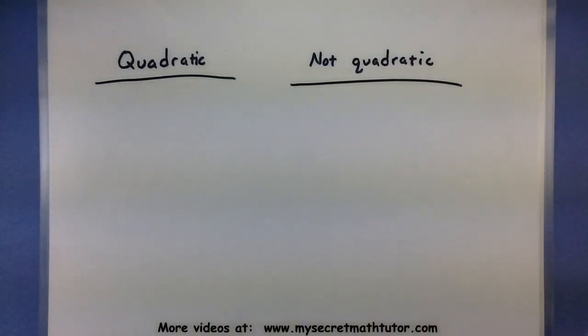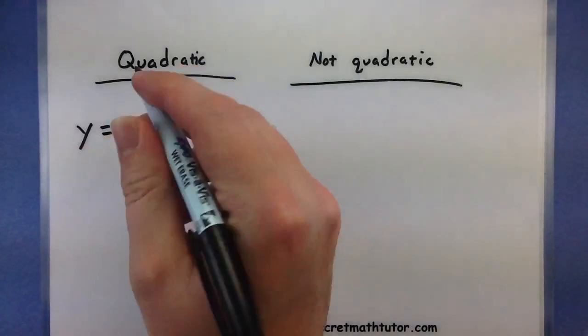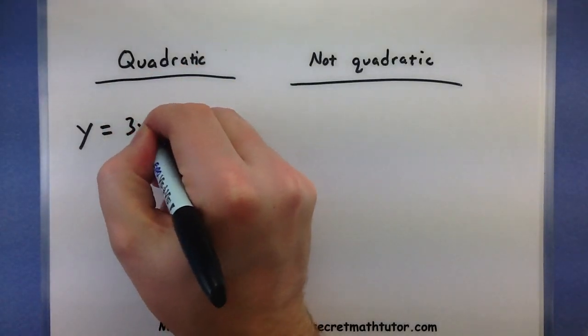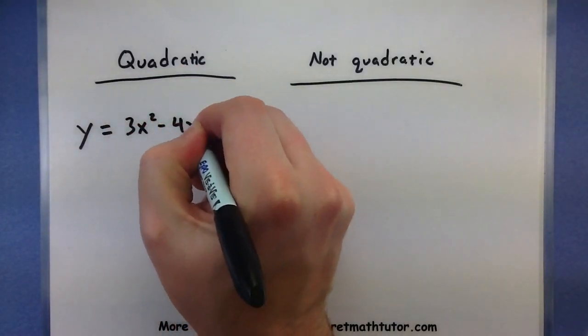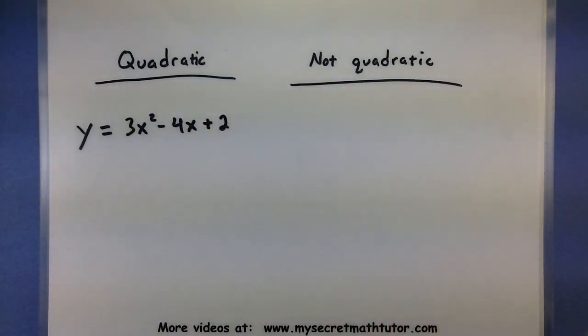So first I'm going to write down examples of quadratics. Maybe a good example would be something like y equals 3x squared minus 4x plus 2. You can see this looks almost identical to the template that I had on the first page.